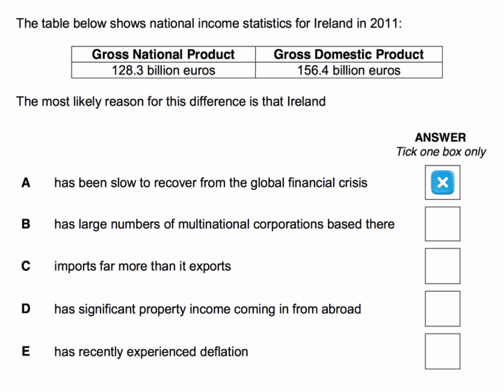What about B? It says Ireland has a large number of multinational corporations based there. Yes, that's right. Because multinational corporations based in and around Dublin, for example, would be adding to GDP in Ireland, but some of the profits would go back to the country of origin. That's why GNP is less than GDP.